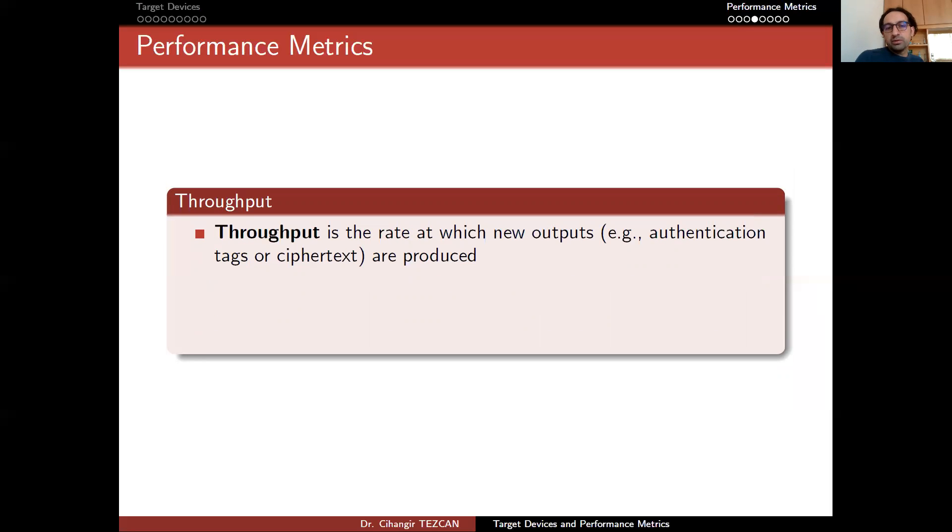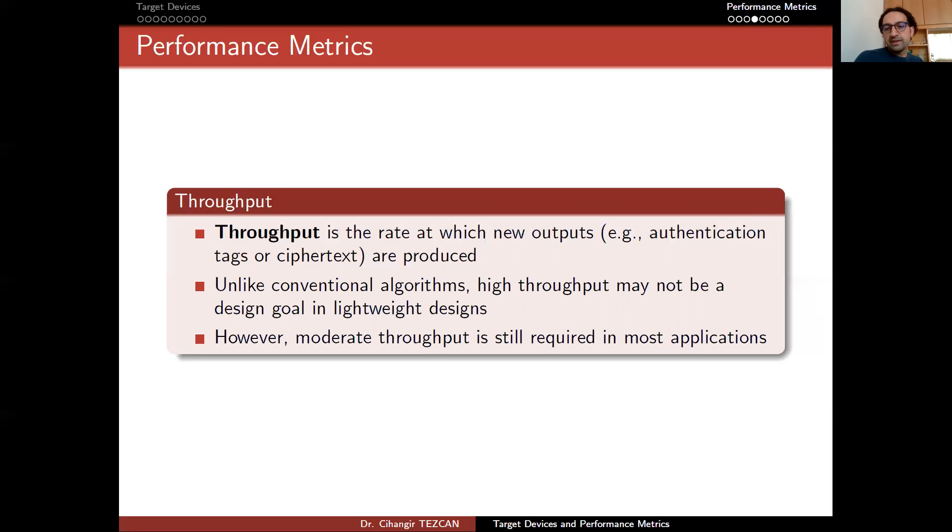Throughput is the rate at which new outputs, for example authentication tags or ciphertext, are produced. Unlike conventional algorithms, high throughput may not be a design goal in lightweight designs. However, moderate throughput is still required in most applications. Yes, we may not require gigabytes of ciphertext per second, but some ultra-lightweight devices are really constrained, have very limited CPUs. So even kilobytes per second may not be achievable for some devices, and the algorithm should address these problems.